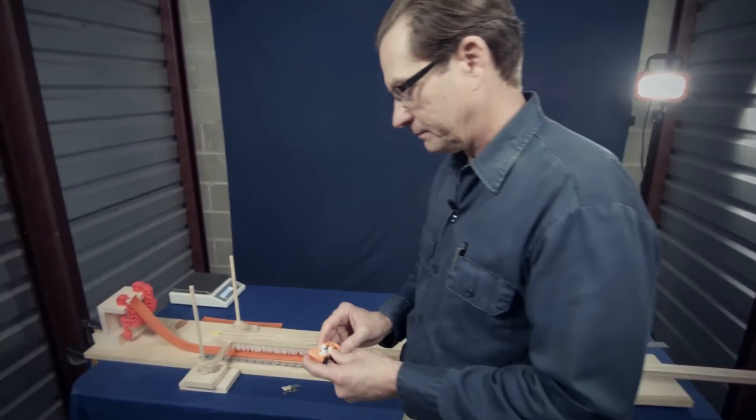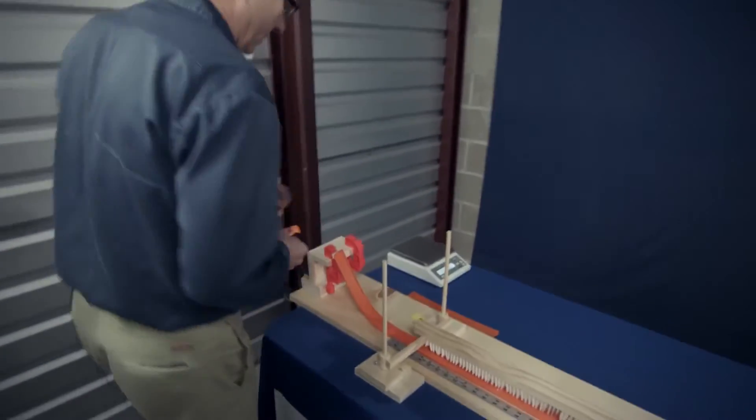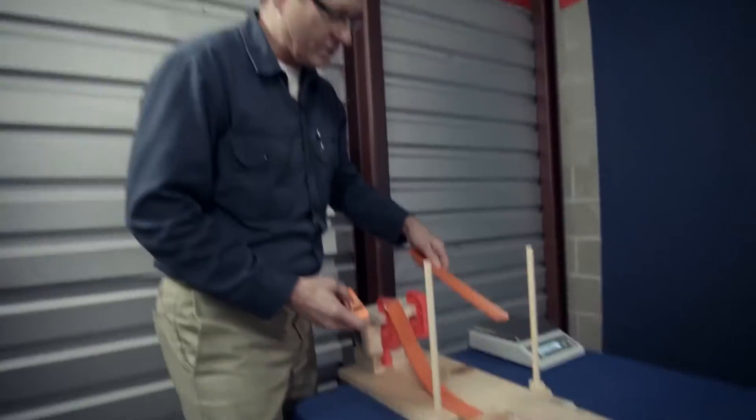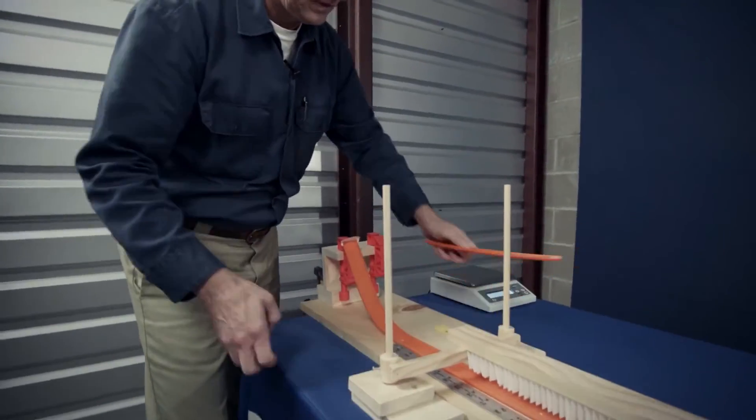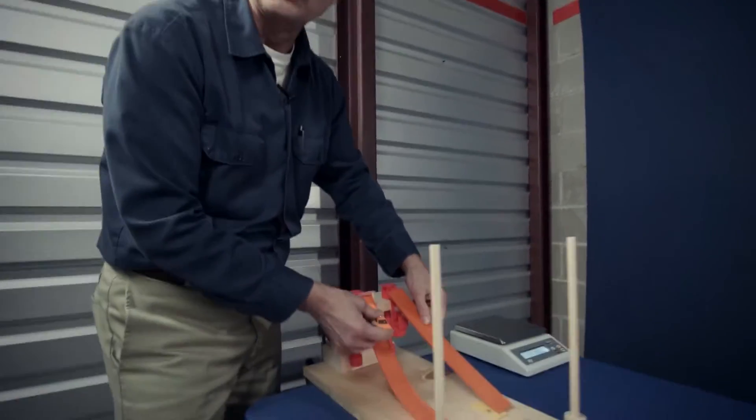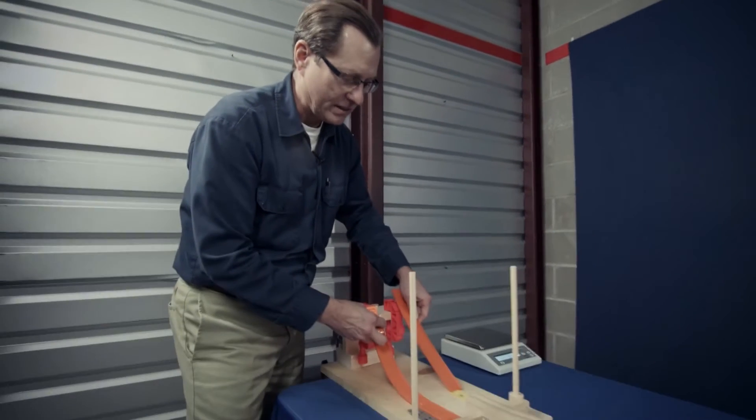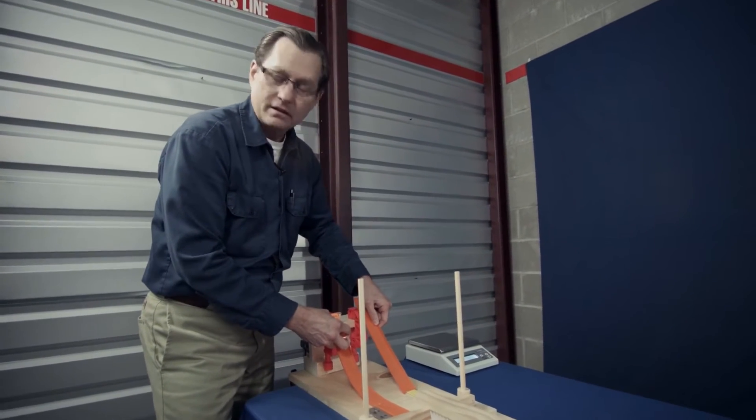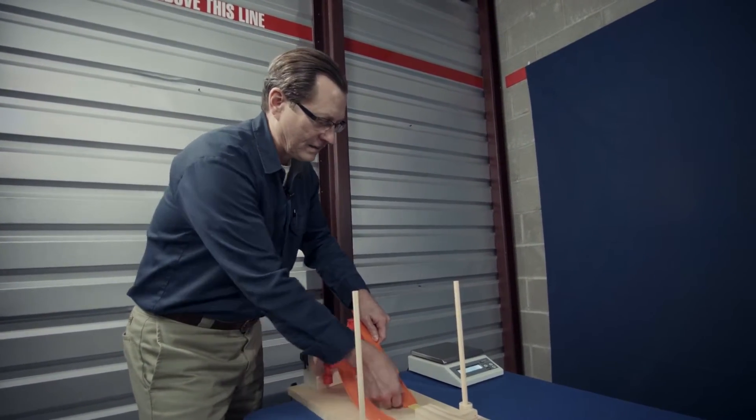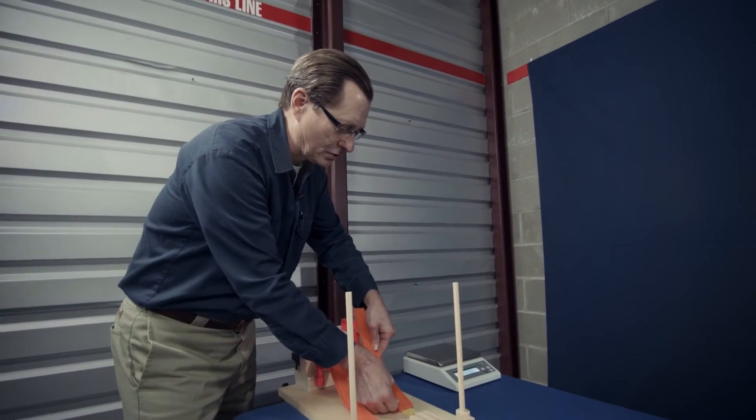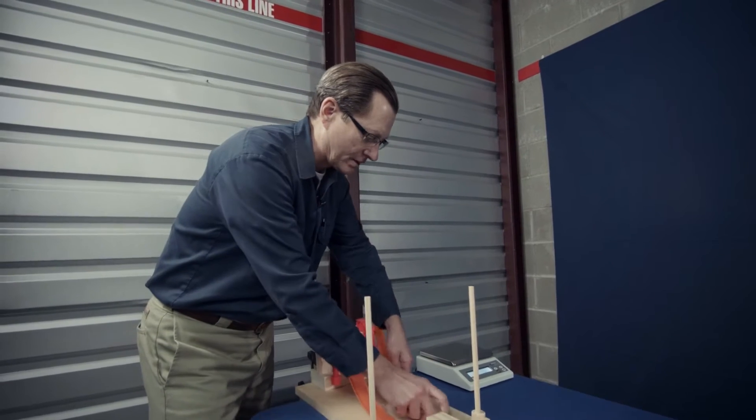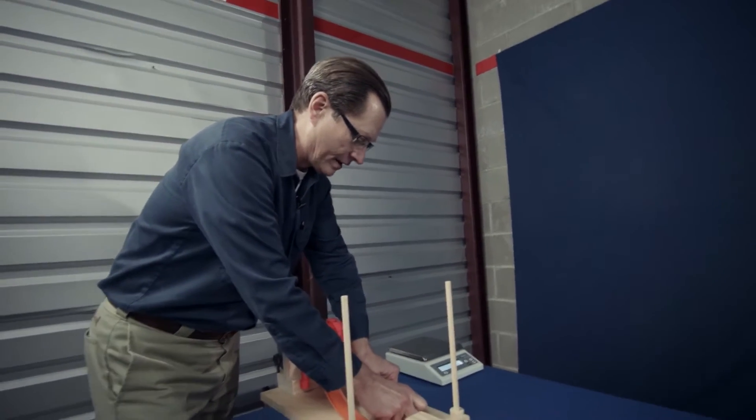To begin the experiment, we first set up two ramps side by side and take two cars and release them simultaneously, so that students can have confirmed in their mind that the two cars will always arrive at the bottom at the same time, no matter how heavy they are.